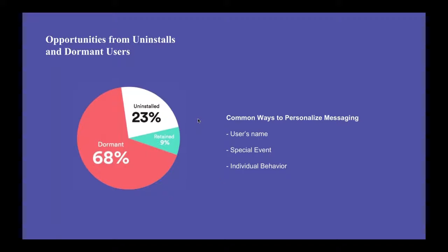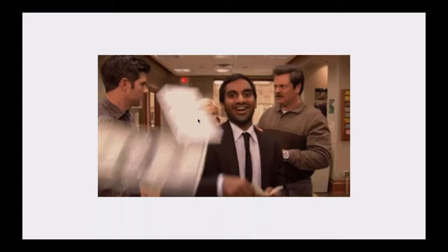Let's discuss opportunities to re-engage dormant users versus uninstalls. We found that 23% of first-time users uninstall the app within the first week of use. This actually creates a big opportunity — you still have 68%, or two-thirds of users, who are dormant and can be re-engaged using push notifications. Our data shows push notifications help retain more users, and sending personalized push can be even more effective. Common ways to personalize push messaging include using the user's name, customizing with specific events like shopping cart items, and responding to individual behaviors. Those 68% of dormant users mean you're losing revenue every day you're not taking action to reactivate them.